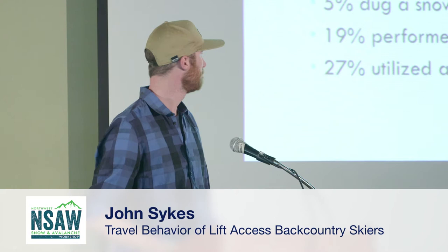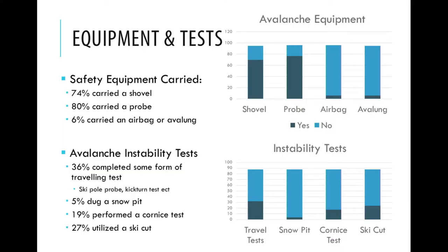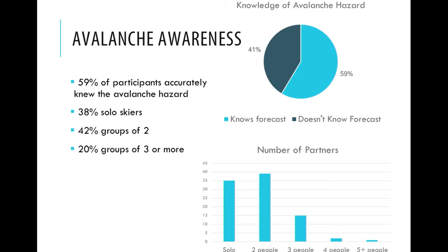The number of people doing cornice tests and ski cuts is a little alarming considering how many people you can have on slope at any given time — and from Diana's presentation, the 2010 avalanche was triggered by somebody knocking down a cornice. We also have a really high number of solo skiers: 35% of our participants were skiing solo, with a large number of groups of two and a steep decline after that.